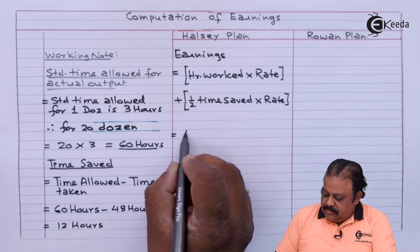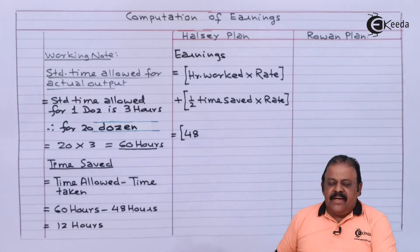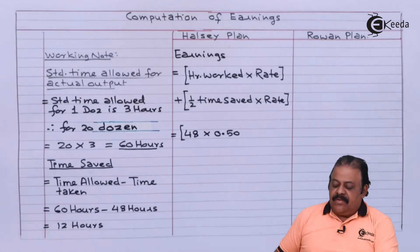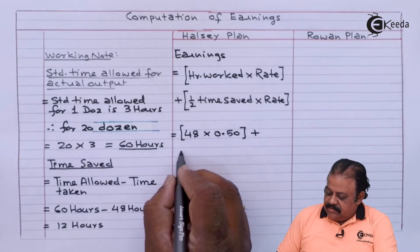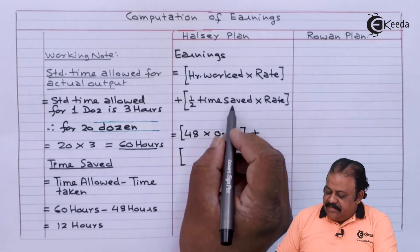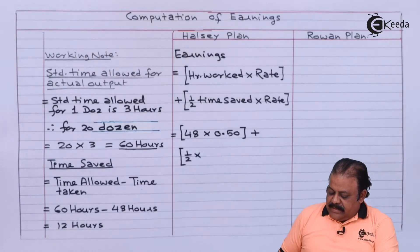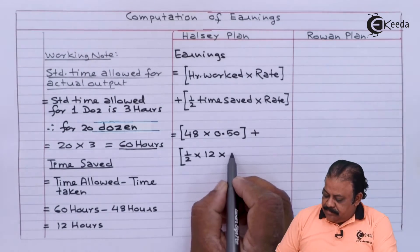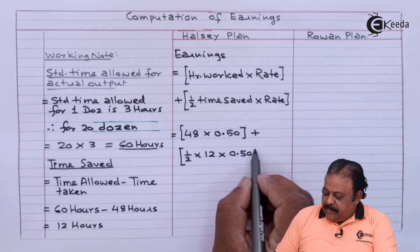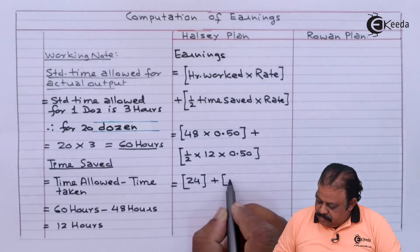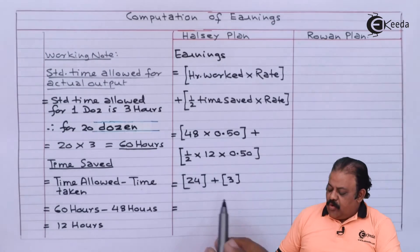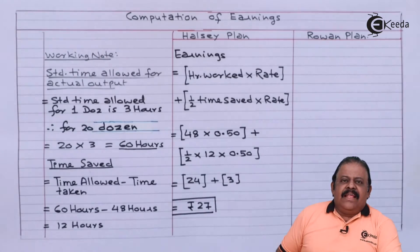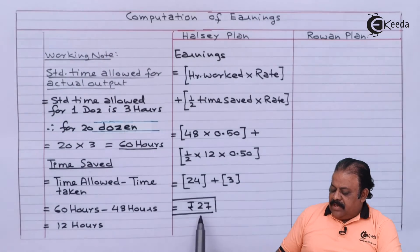So 48 hours worked multiplied by rate of 50 paise per hour, plus half of time saved — which is half of 12 hours — multiplied by the rate of 50 paise. This comes to rupees 24 plus rupees 3. Under the Halsey plan, total wages of the worker will be rupees 27.